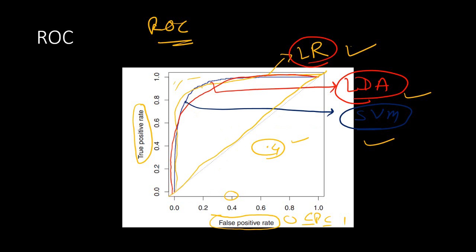The diagonal line is the baseline. The curve should not fall below this baseline; otherwise, it is a very bad model that cannot even do better than a random guess. The model should always be on the upper-left side of this baseline.